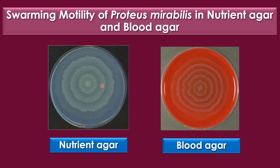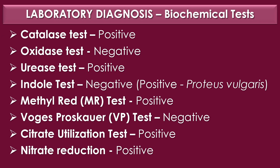Images show the swarming motility of Proteus mirabilis on nutrient agar and on blood agar. Biochemical test results for Proteus mirabilis: catalase positive, oxidase negative, urease positive, indole negative (indole is positive only for Proteus vulgaris), methyl red (MR) test positive, Voges-Proskauer (VP) test negative, citrate utilization test positive, and nitrate reduction test positive.